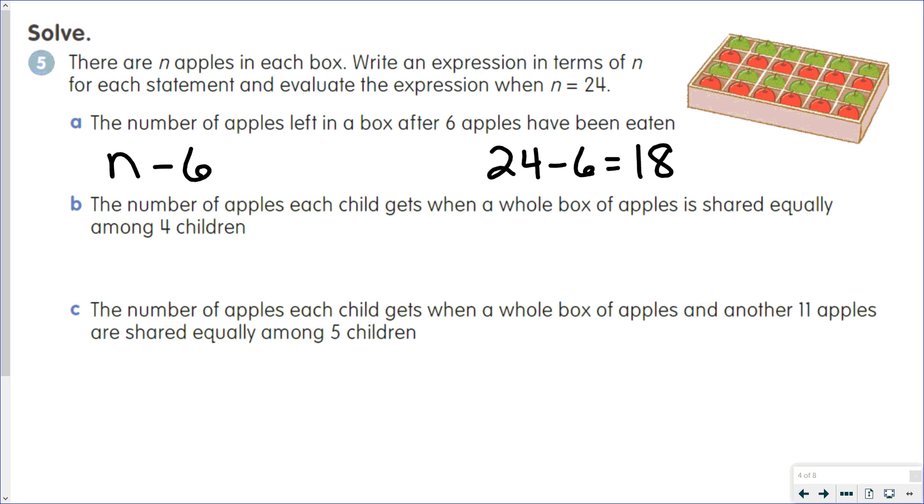The number of apples each child gets when a whole box of apples is shared equally among 4 children. So we're going to take that and we're going to divide it by 4. And so we do 24 divided by 4 equals 6.